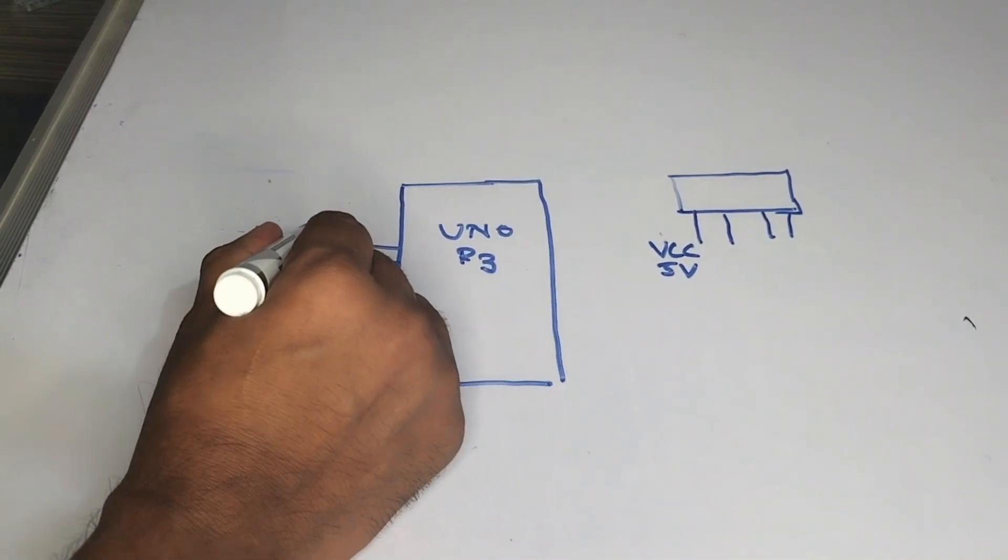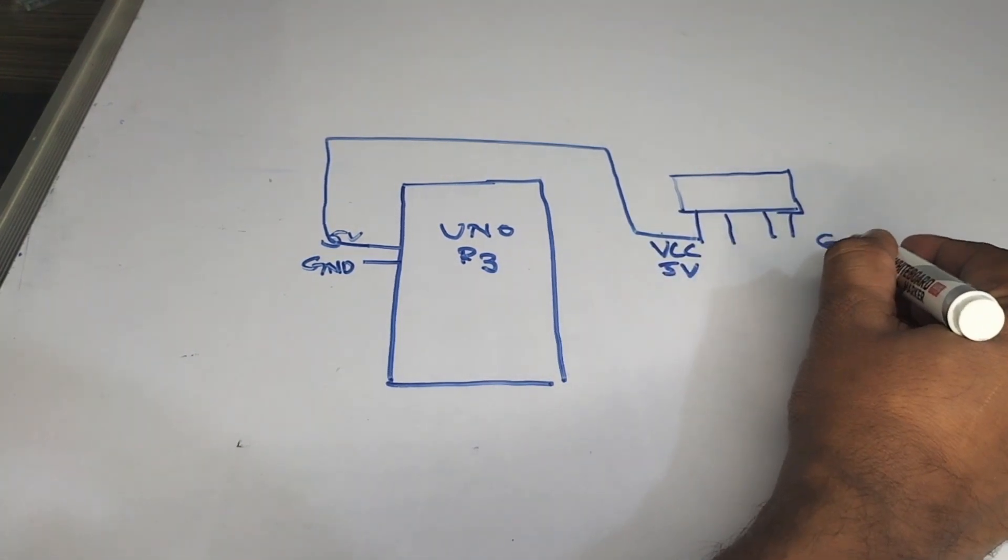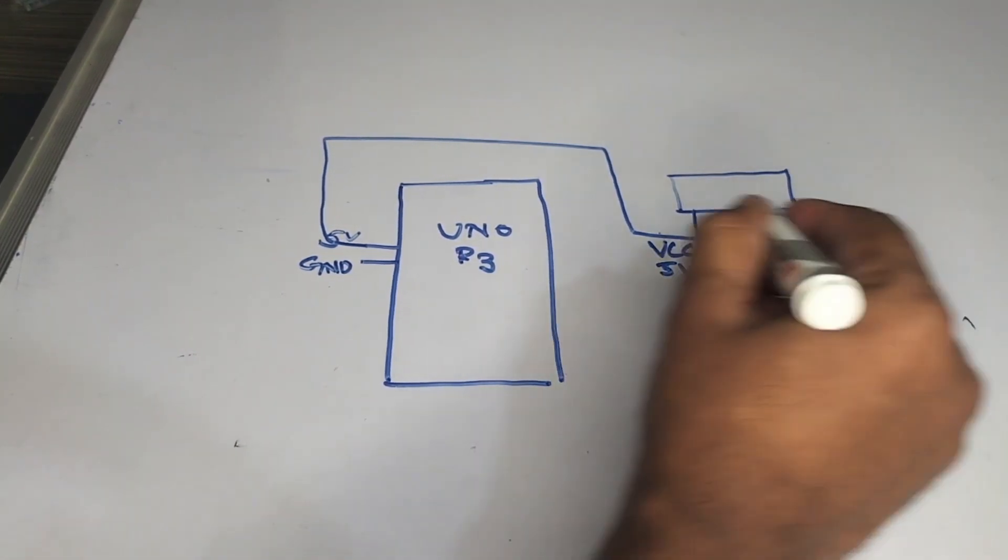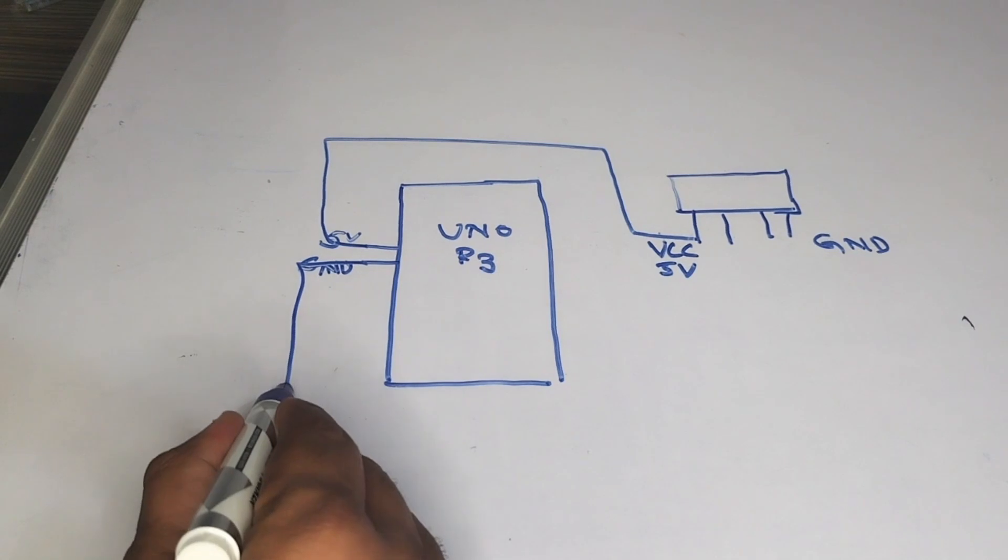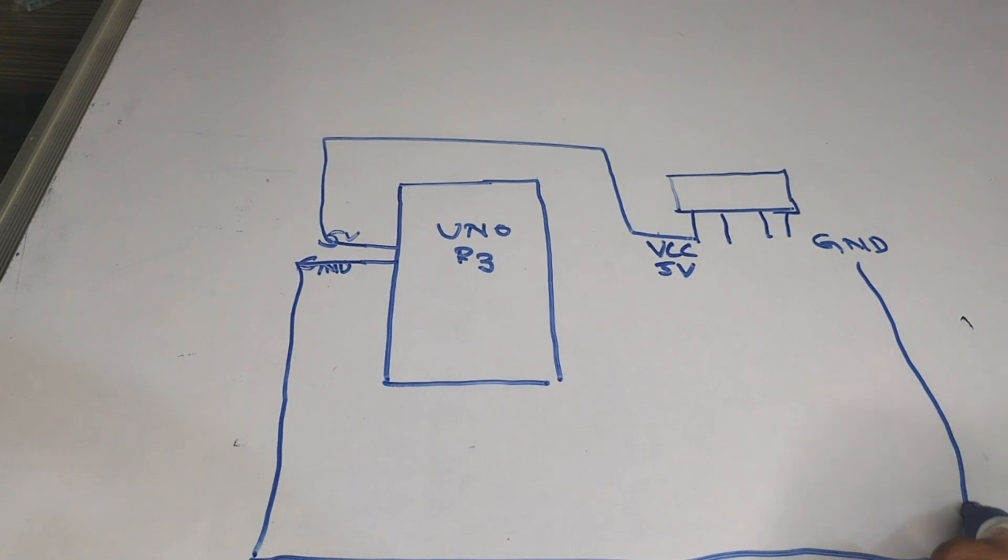The first one will be the VCC, that is nothing but the 5 volts. I try to take the 5 volts and hand over to here. The second last one will be the ground, so that will be going over here. The ground is connected to the ground.